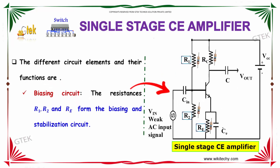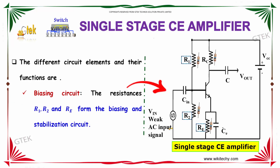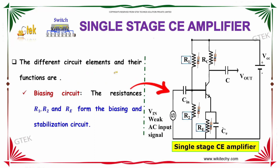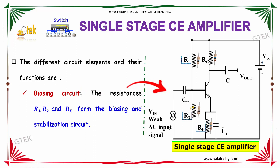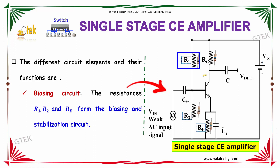Now, let's move on to the single stage common emitter, its collector, emitter amplifier. The different circuit elements and their functions are: you got a biasing circuit, the resistance R1, R2 and Re form the biasing and stabilizing circuit.